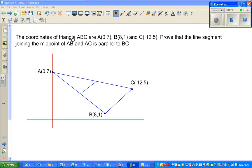The coordinates of triangle ABC - this is triangle ABC, this is not drawn to scale - are A(0,7), so this is point A(0,7), B is (8,1) and C is (12,5). Prove that the line segment joining the midpoints of AB and AC is parallel to BC.